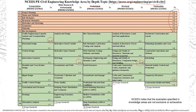NCEES notes that the examples provided in these knowledge areas are not exclusive or exhaustive — they reserve the right to ask other topic questions. This is guidance for what to expect. On the exam, you'll see 40 problems in the breadth areas and 40 problems in your chosen depth discipline, making it an 80-question exam split between breadth and depth topics within civil engineering.